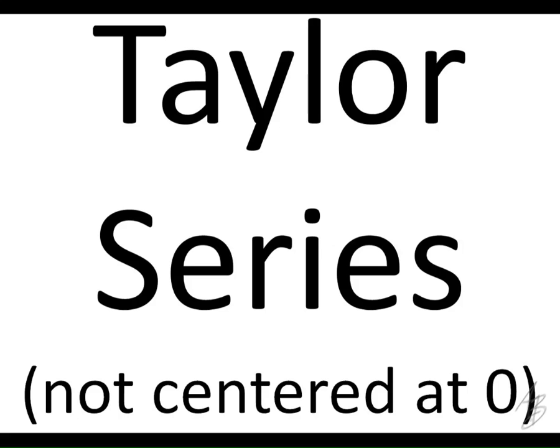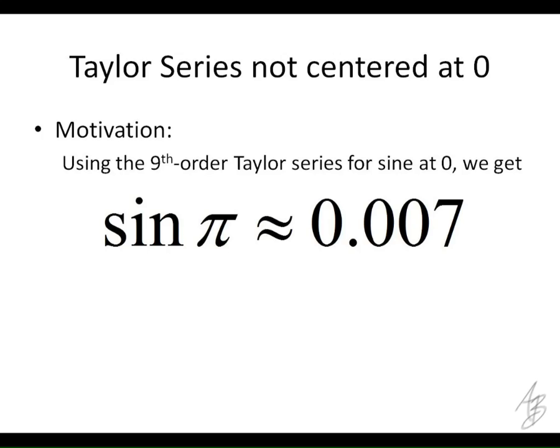So if we want to know what sine of, say, 31 is, we could write out enough terms in the power series for sine to figure out what the sine of 31 is within one one-thousandth or even one one-billionth if we wanted. The problem, though, is it might take a lot of terms. Let's say we use the ninth order Taylor series for sine at zero. The Taylor series for sine is x minus x cubed over three factorial plus x to the fifth over five factorial, and we're going to go up to the x to the ninth power term.